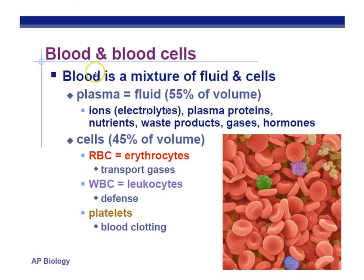Blood and blood cells. Blood is a mixture of fluid and cells. The liquid part, called plasma, makes up about 55% of the volume, and the cells make up about 45%. Plasma contains ions, electrolytes, plasma proteins, nutrients, waste products, gases, and hormones.